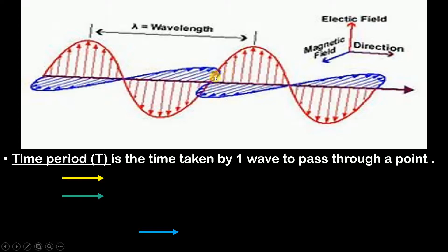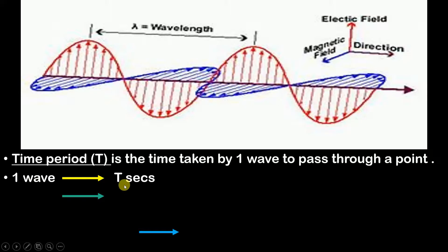This wave starts at one point and ends at another point. Similarly, the blue color wave also starts and ends at corresponding points. Since both waves travel together and have the same size, their time periods are the same. Time period T — represented by capital T — is the time taken by one complete wave to pass through a particular point.